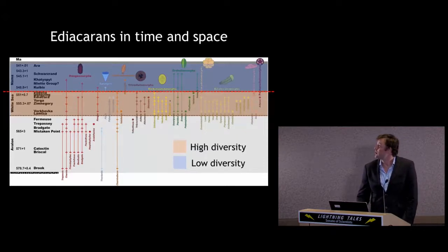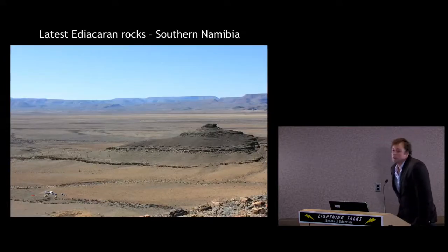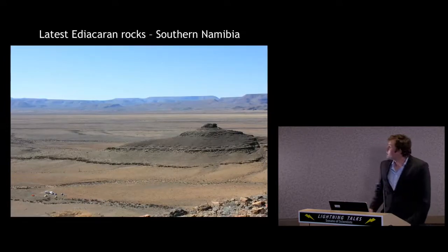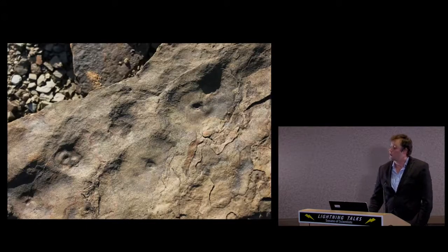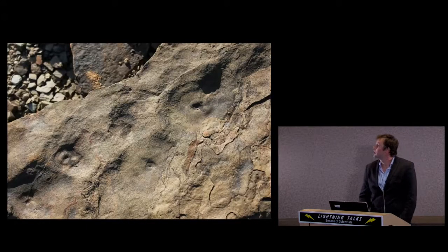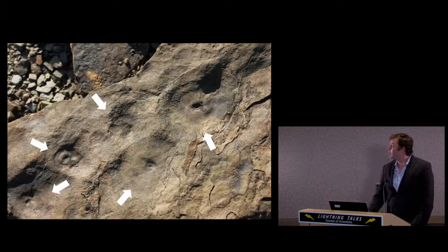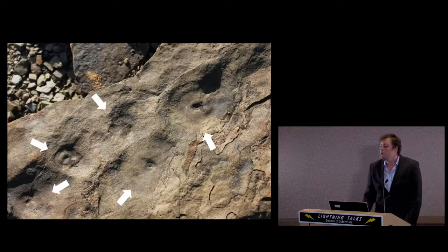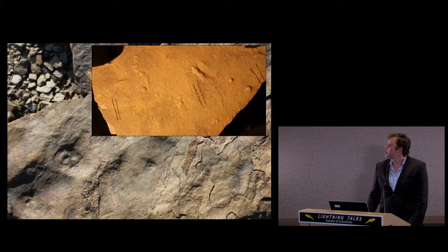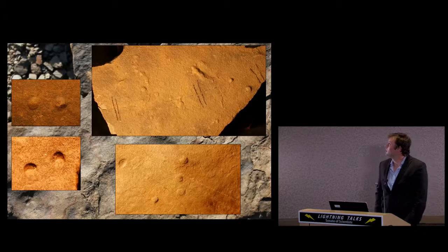To get a closer look at this, I've been working in southern Namibia where these latest Ediacaran rocks are exposed at the surface. Here are some Ediacaran fossils from the latest Ediacaran — they don't look like much, so I've enhanced them; you're only looking at floppy disk-like shapes. What's unique about these Ediacaran fossils is that in the same slabs, we have this weird collection of pits, bubbles, and trails.